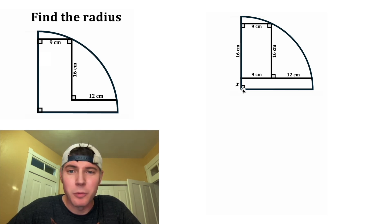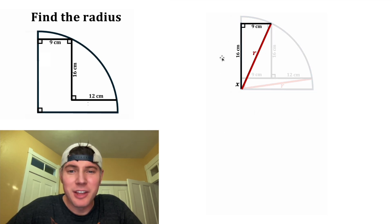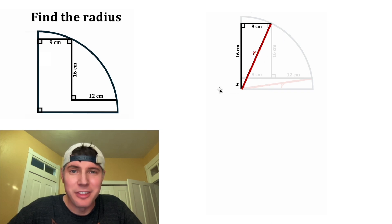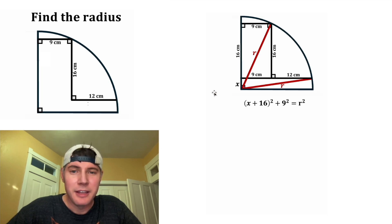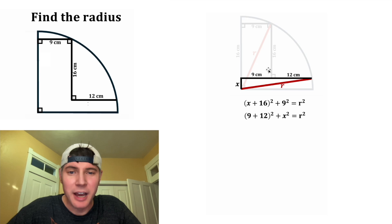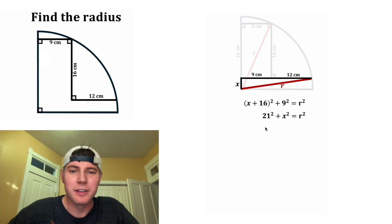Next, let's draw two of our radii — one from here to here, and one from here to here. These are both radii, so we'll call them R. I want to focus on this triangle right here. This is a right triangle, so we can use the Pythagorean theorem: (X + 16)² + 9² = R². And then let's do the same thing for this triangle down here: (9 + 12)² + X² = R². This 9 + 12 inside the parentheses can be 21.